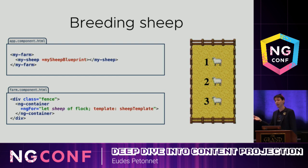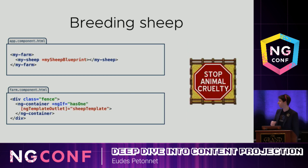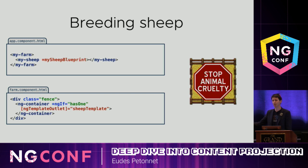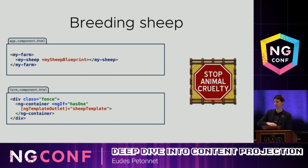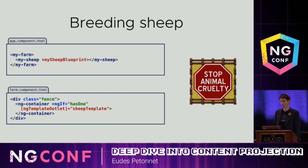Recall the ng-if example from earlier — we can do the same with a template ref and ng-if. Put ng-if on the template outlet, and it will properly destroy and recreate a new sheep every time. For obvious animal rights reasons I won't show this live, but if I toggled it, I'd get sheep one, then hide it, show again to get sheep two, hide and show again to get sheep three — delete and recreate a new instance every single time.